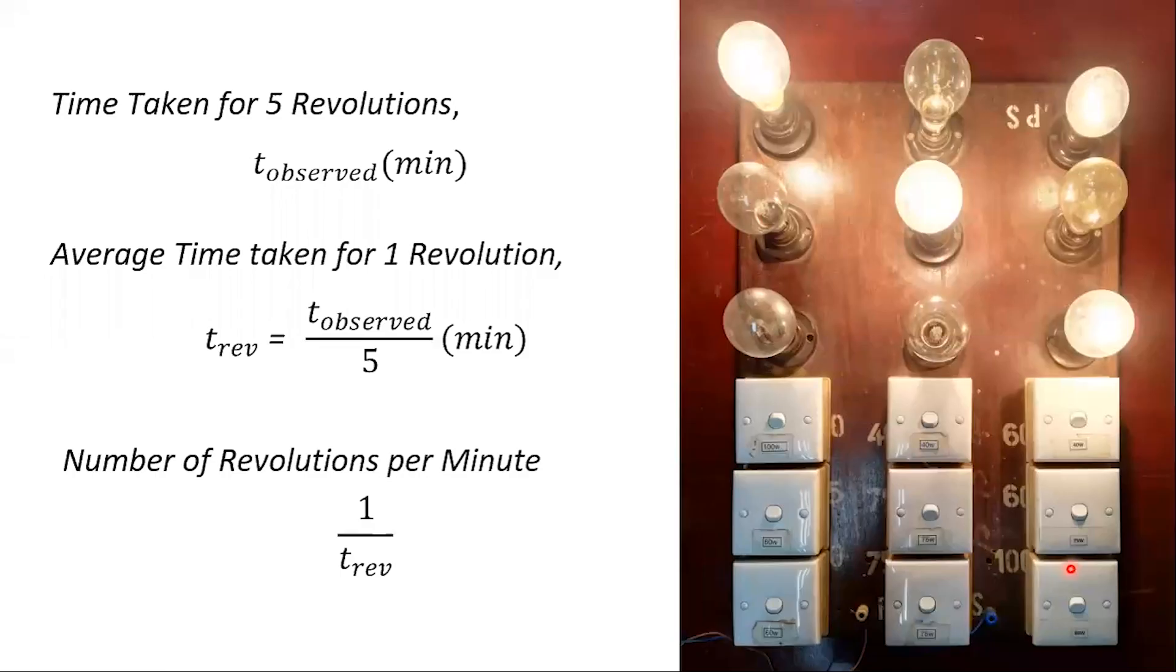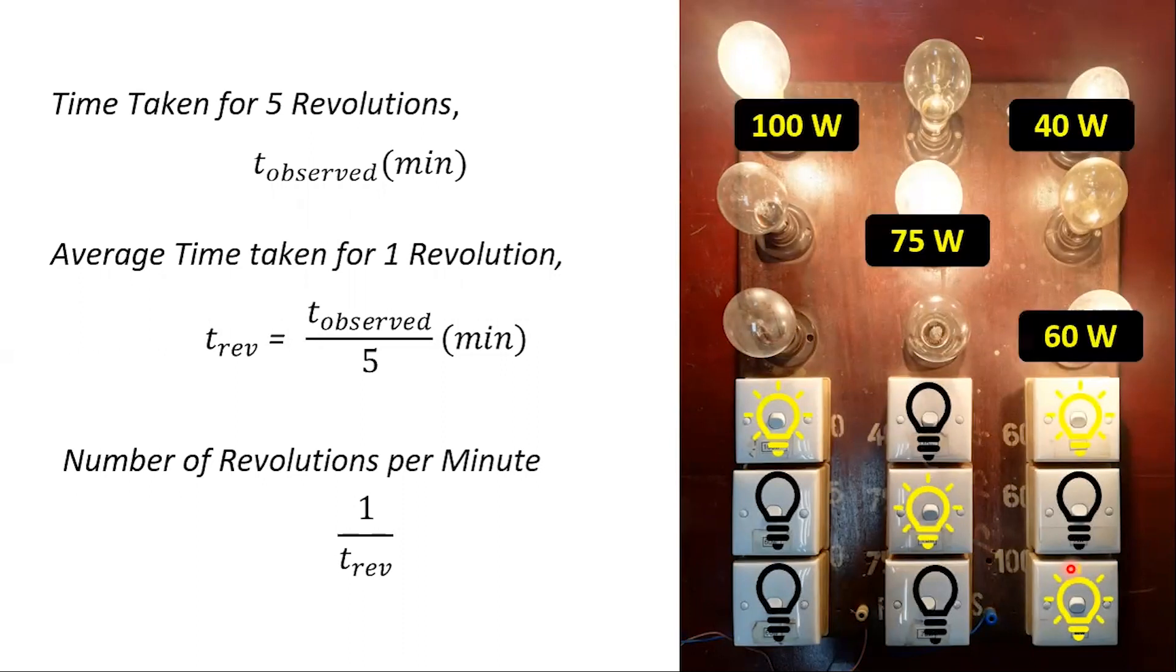For better accuracy, we can measure the time taken for five revolutions instead of one and follow the steps as shown. In this example, we have turned on four switches, that is, a total load of 275 watts is connected.